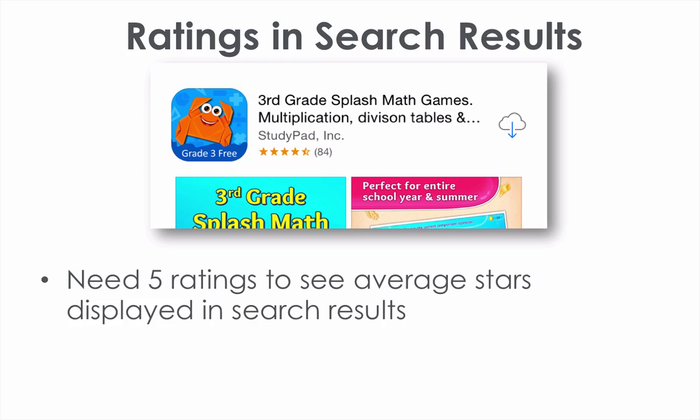The first rule is that you need five ratings or reviews to see the average stars displayed in the search results. If you have one, two, or three reviews, for example, you're not going to see the star rating there. Apple waits until you have five reviews or five ratings before showing the stars.